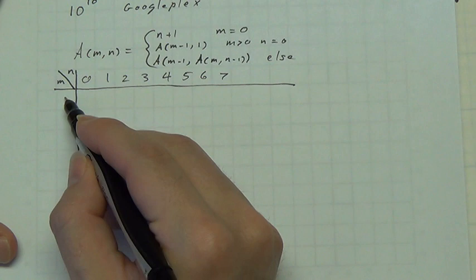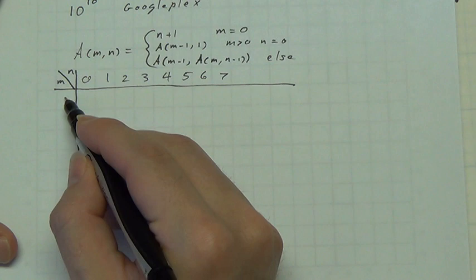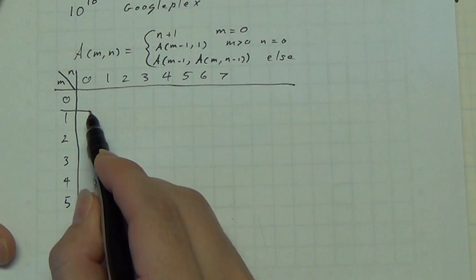Let's put the m down here and the n here. 0, 1, 2, 3, 4. Yeah, we are not going to get very far in this. 0, 1, 2, 3, 4, 5. That's probably about as far as we are going to get anything.